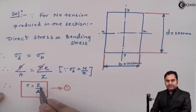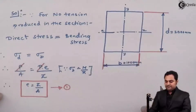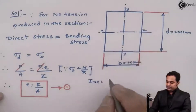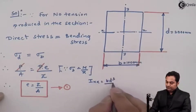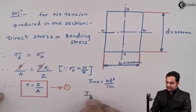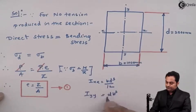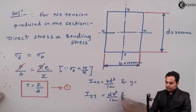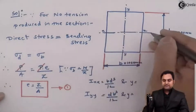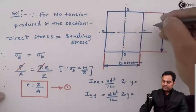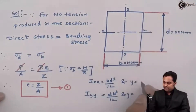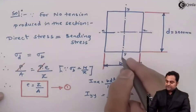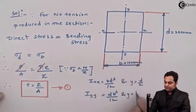We need ZXX and ZYY values, for which we require IXX and IYY. For a rectangular section: IXX = BD³/12 and IYY = DB³/12. For the X axis, the distance Y to the extreme fiber is D/2. For the Y axis, the distance to the extreme fiber is B/2.